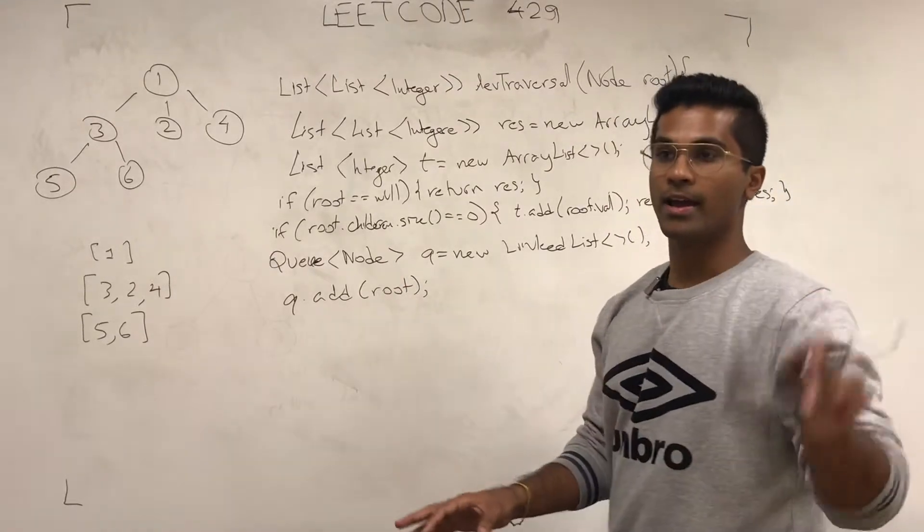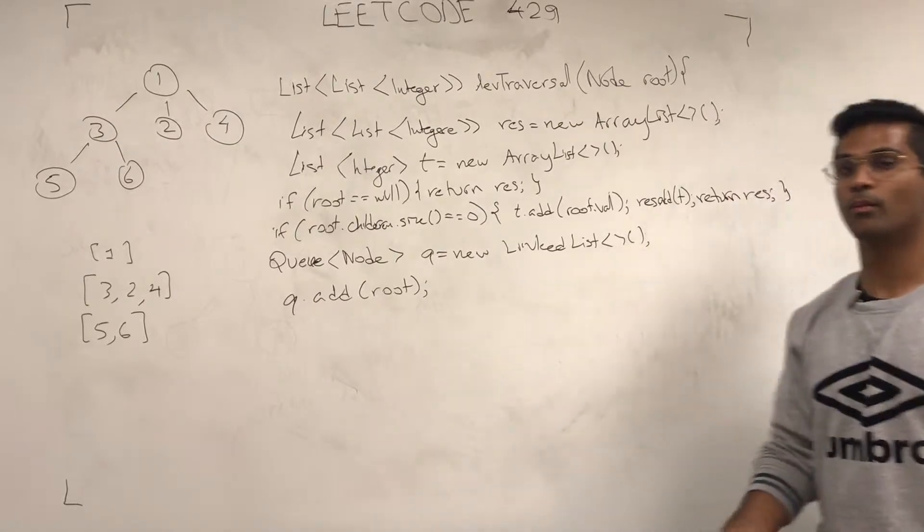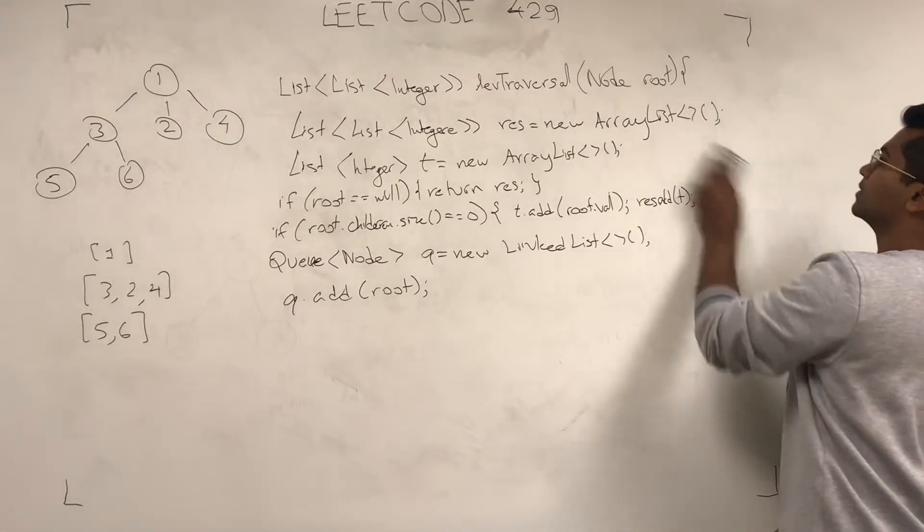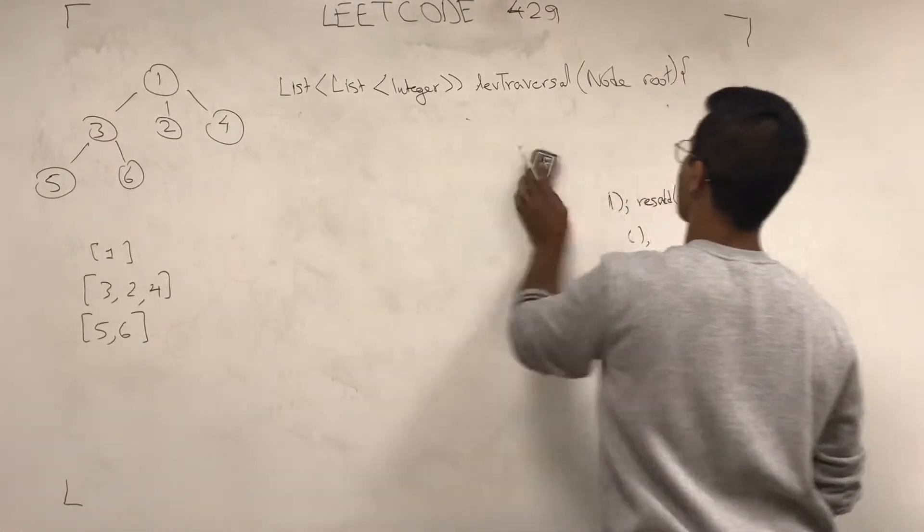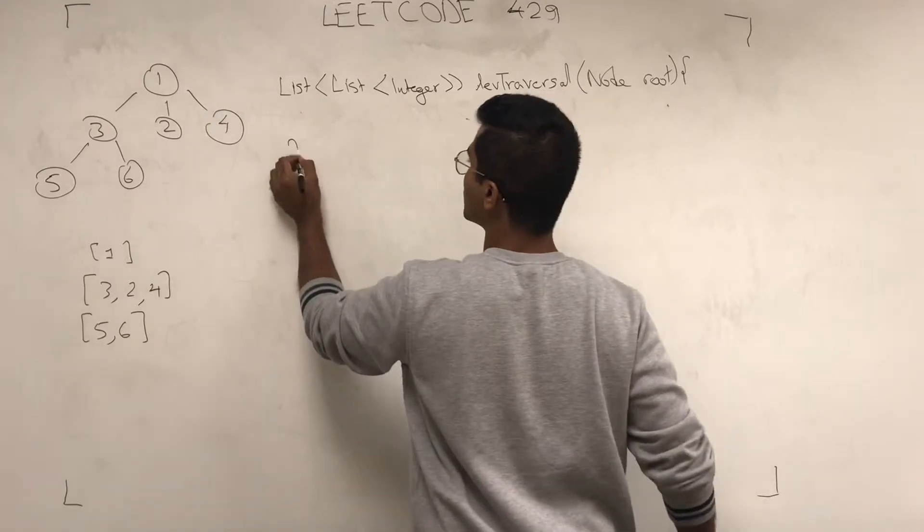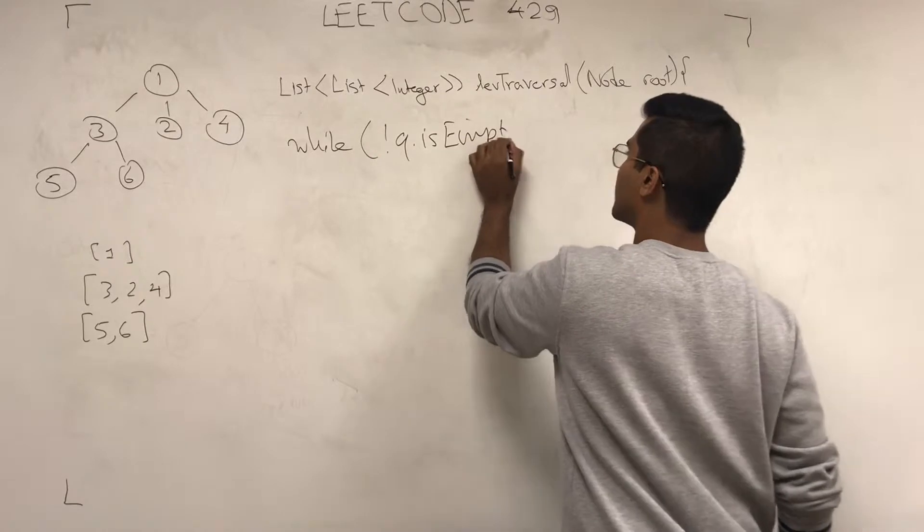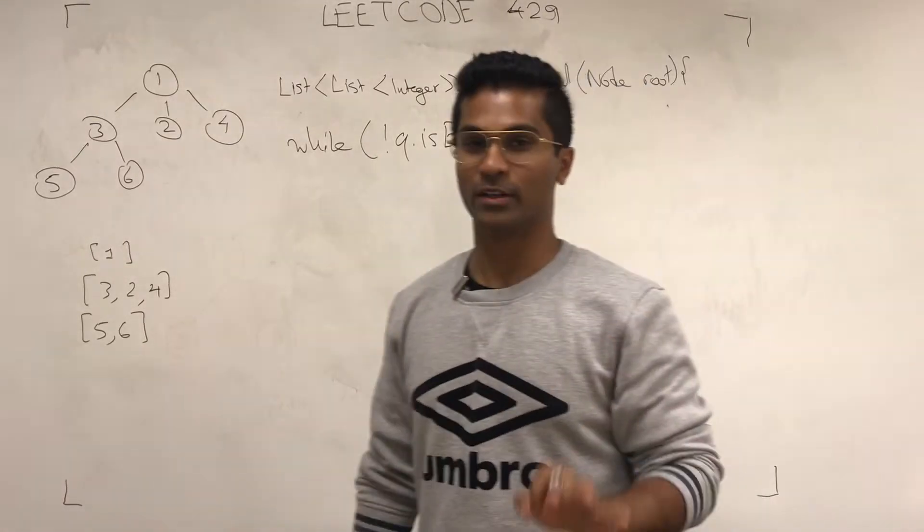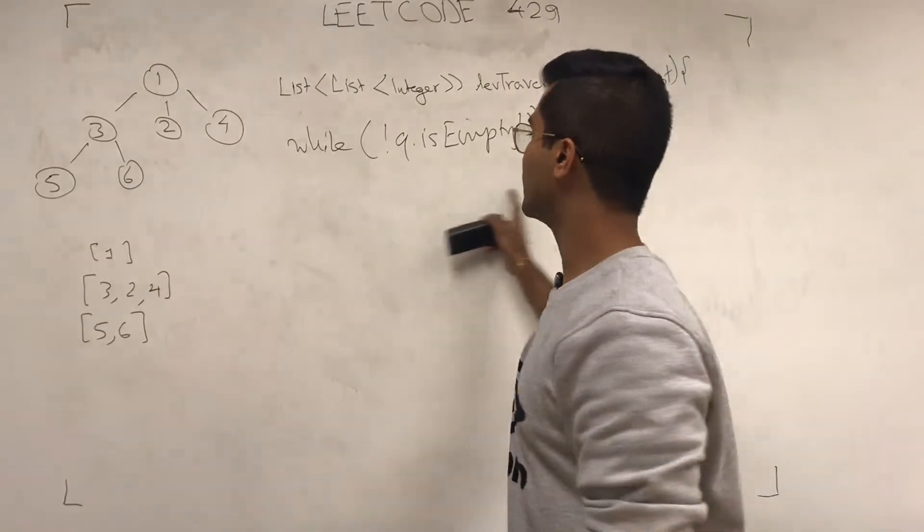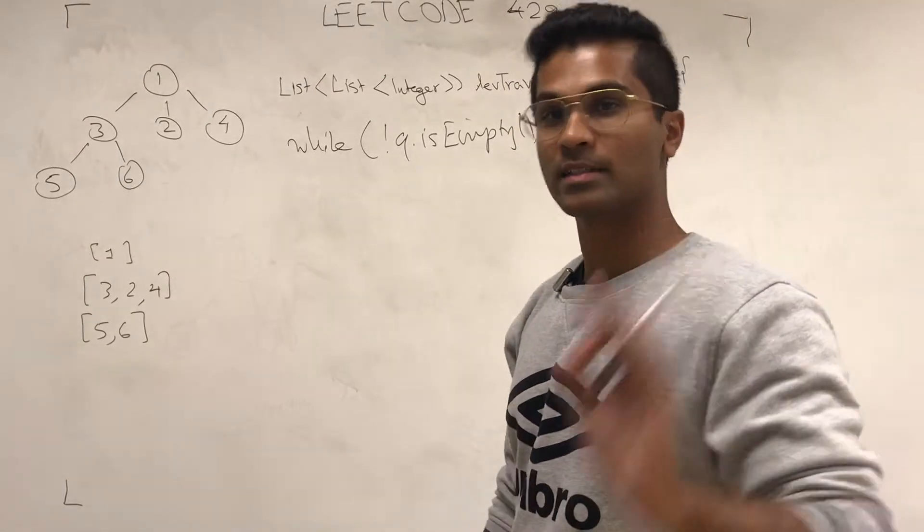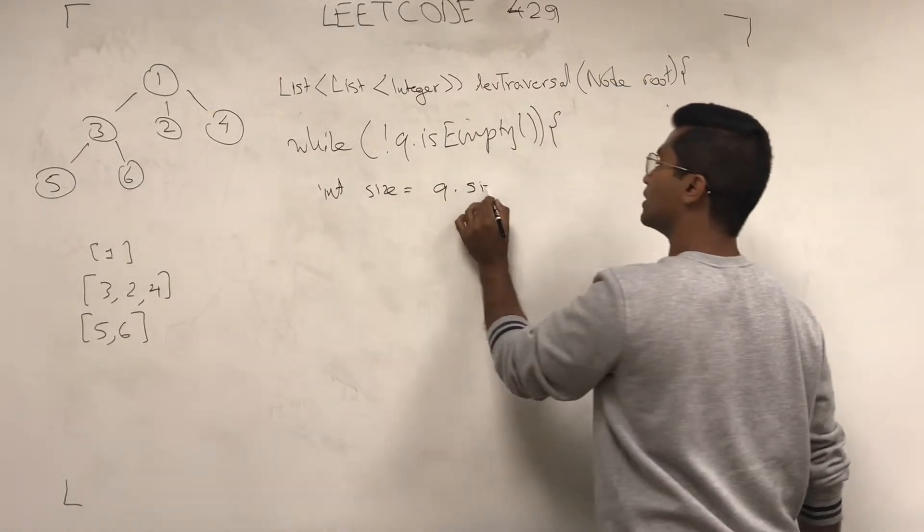So, now we got the basics of the data structure. So, let's erase this and then write the iteration of the while loop. So, while q isn't empty. Now, let's be careful here. This is the difference I told you in the beginning. Usually, we'll pull it right away. But for something like this, we're going to take the size. So, int size equals q.size.